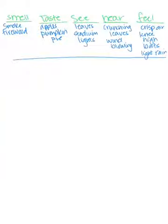Hi everybody, today we are going to be taking it one step further by taking our circle maps that we did on our senses for fall — that we worked on yesterday — and actually getting to create our own introduction. Remember, we talked a little bit yesterday and I showed you examples of how authors can set the scene as a way to introduce a story by really using lots of descriptive words to really paint a good picture for the reader of exactly where the story is taking place.